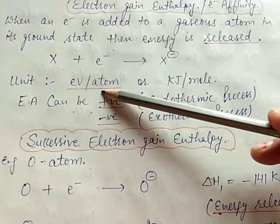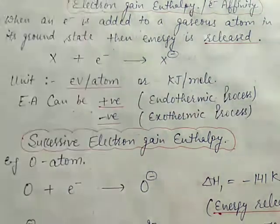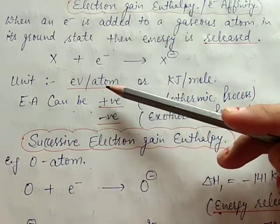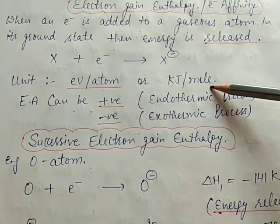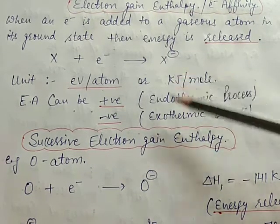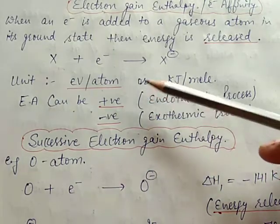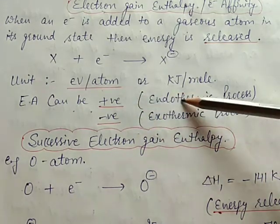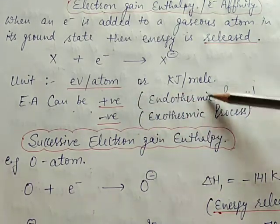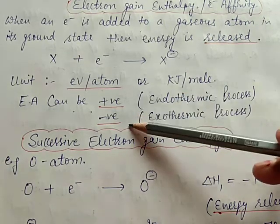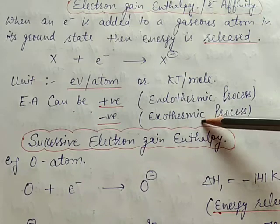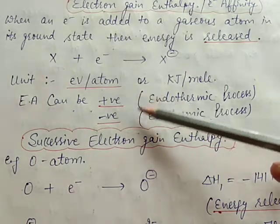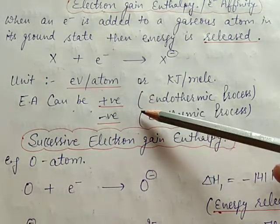What is the unit of electron gain enthalpy? It is electron volt per atom or kilojoule per mole. Its value can be negative or positive — positive in the case of an endothermic reaction where heat is absorbed, and negative in the case of an exothermic reaction where heat is released. This depends on the nature of the element to which the electron is added.